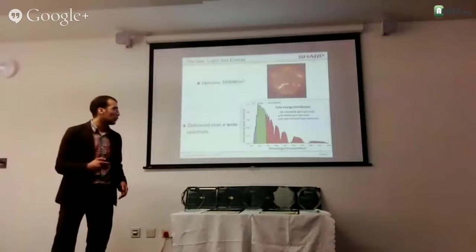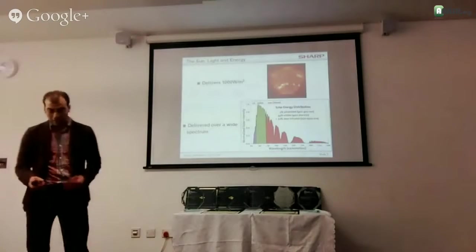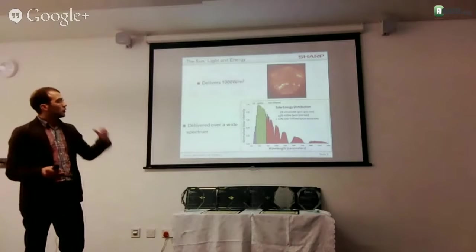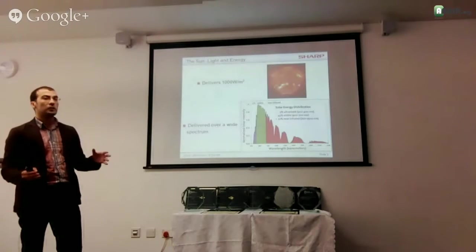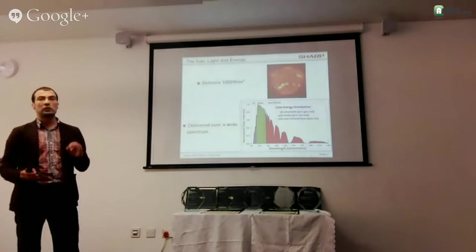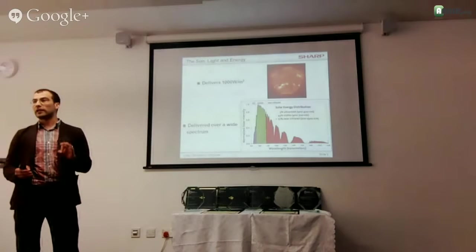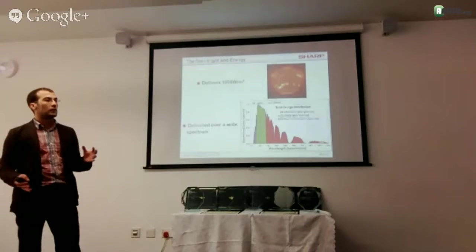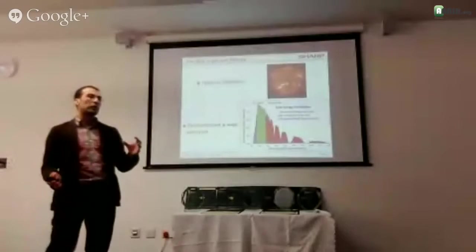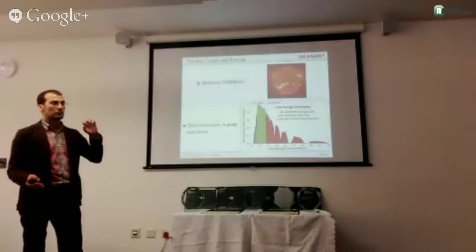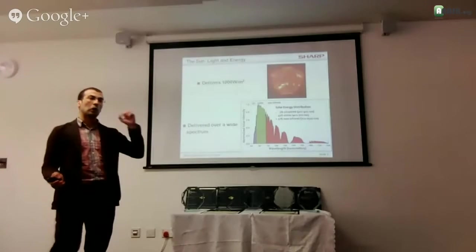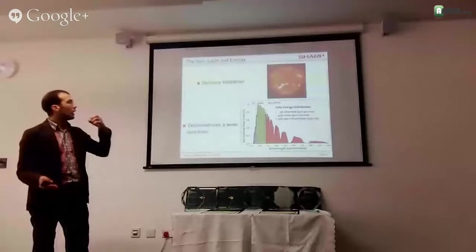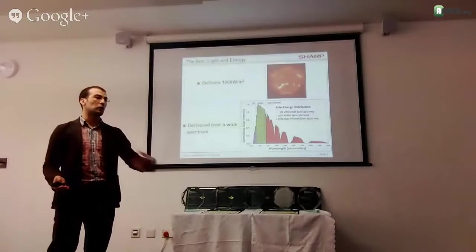In terms of the Sun, I just wanted to put some numbers here. The Sun delivers approximately, this is a minimum figure, a thousand watts, one kilowatt per square meter. So wherever you are on Earth, approximately, for every square meter there is one kilowatt dropping of light energy which is constantly irradiating this one square meter.